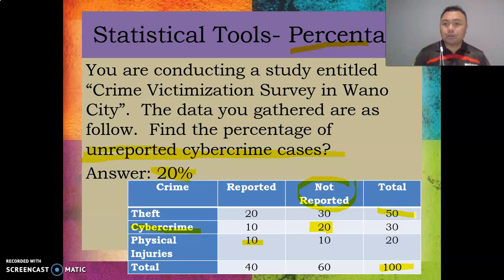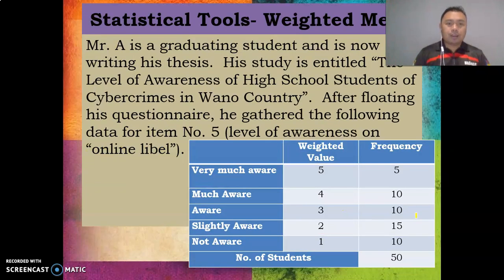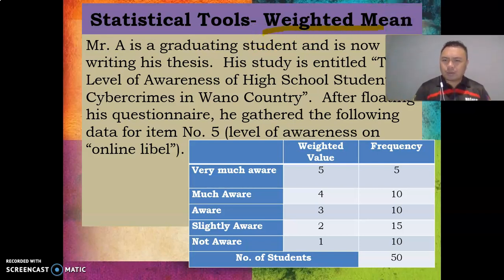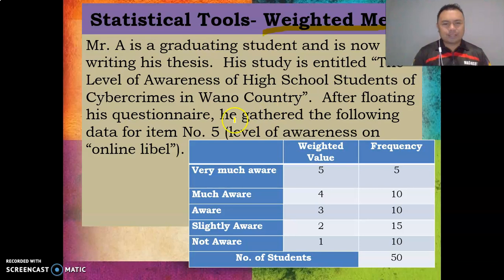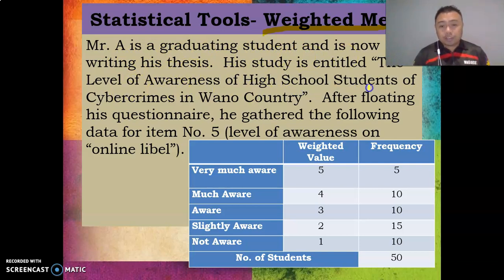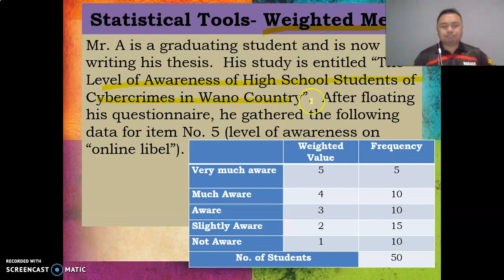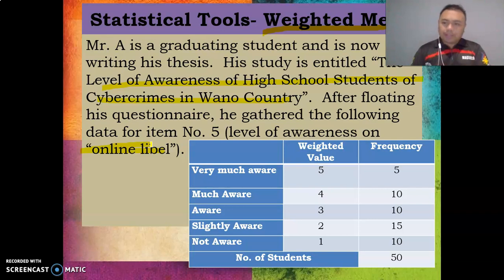Now the weighted mean is a bit more involved, but if you follow the rules it's manageable. For example, Mr. J is a graduating student writing his thesis entitled 'The Level of Awareness of High School Students of Cyber Crimes in Wano Country.' After floating his questionnaire, he gathered the following data for item number five: level of awareness on online libel.